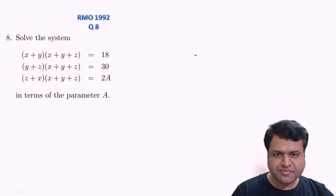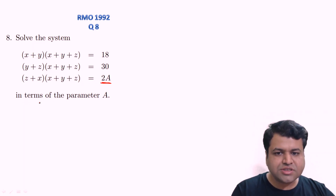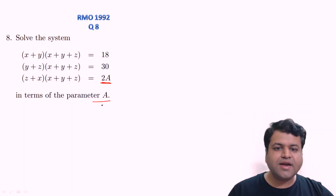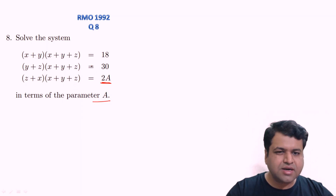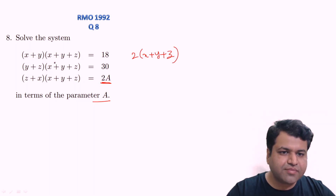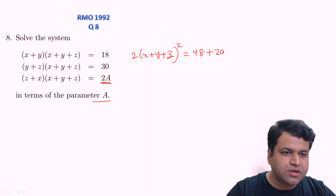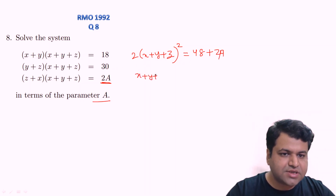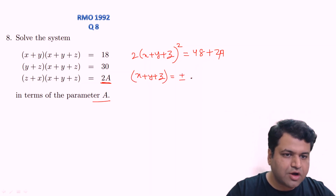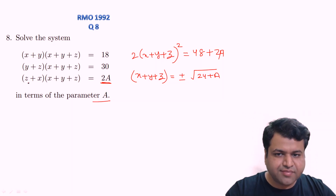Question 8 states: (x+y)(y+z) = 18, (y+z)(z+x) = 30, and (z+x)(x+y) = 2a. We need to solve this system for x, y, and z in terms of the parameter a. Adding all three equations gives 2(x+y+z)(x+y+z) = 48 + 2a, so (x+y+z)² = 24 + a, meaning x+y+z = ±√(24+a).